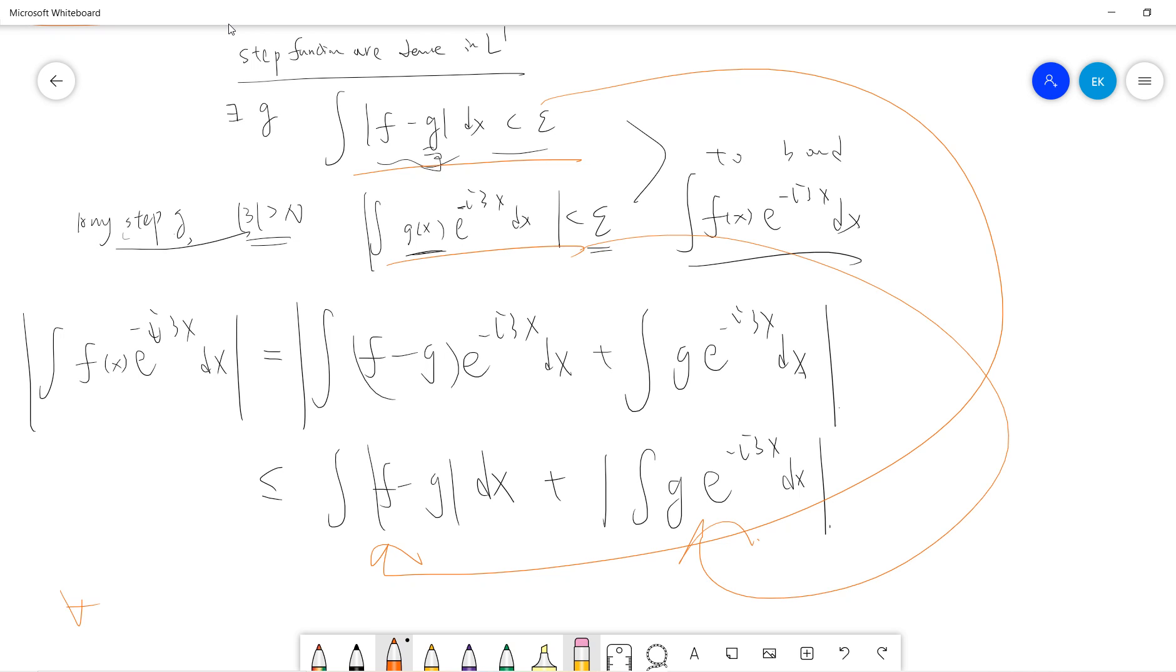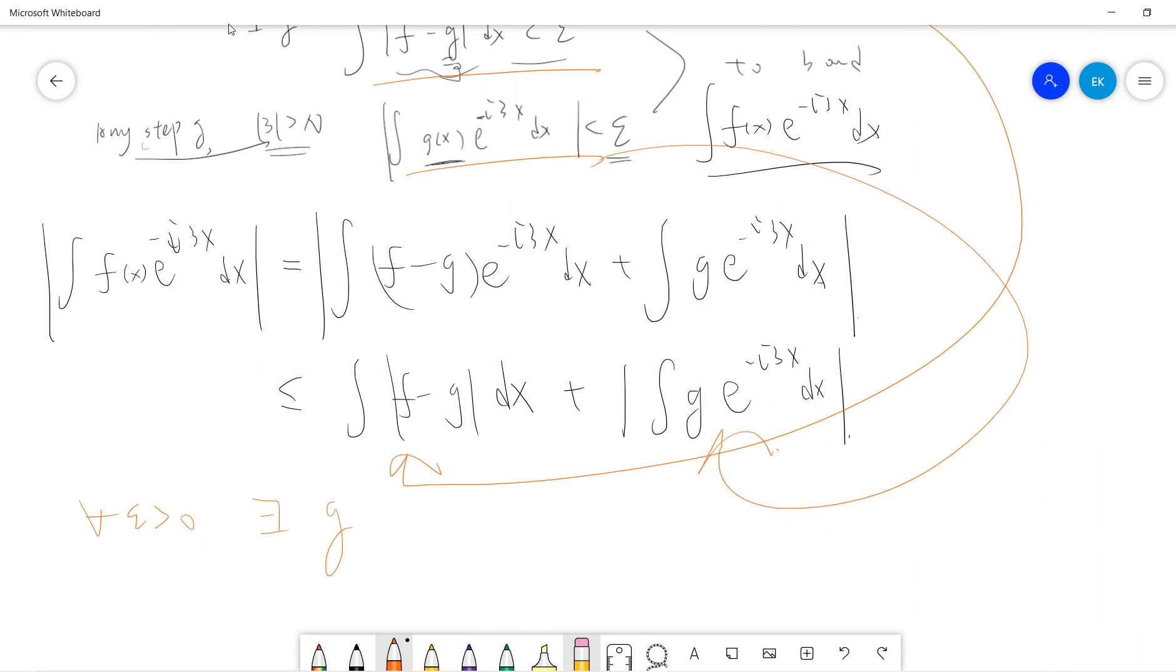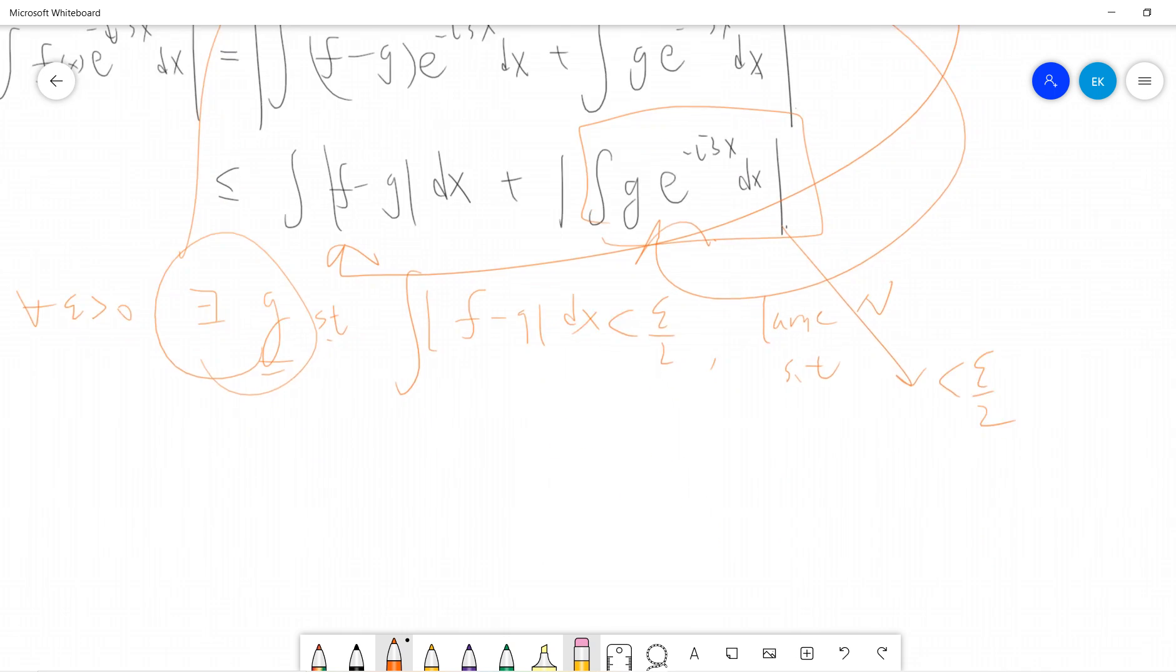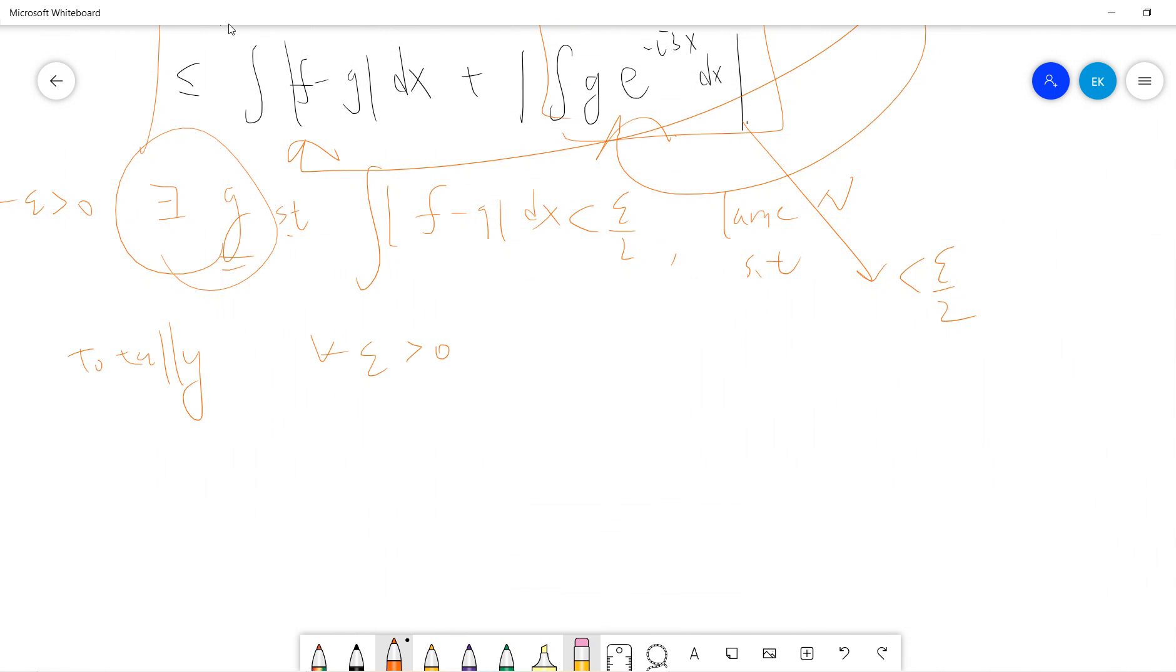Okay, so we see that this term controls this term and this term controls this term. So that means if you choose epsilon greater than zero, I can already find a step function g such that integral f minus g dx is less than epsilon divided by two. And for this step function, I can find a large n, such that this term is less than epsilon divided by two. So totally for epsilon greater than zero, we can always proceed. So that means your f, this guy, absolute value can be arbitrary small.